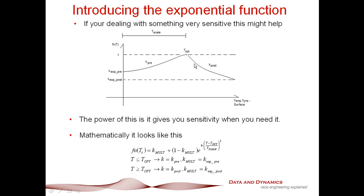The shape of this curve is basically dictated by the values of k pre and k post. Effectively, the bigger these values are, the more sensitivity you're going to get. You can also turbocharge it by playing around with this temperature scale function as well. The beauty about this formulation is it gives you sensitivity when you need it. That really is the power of this exponential function.